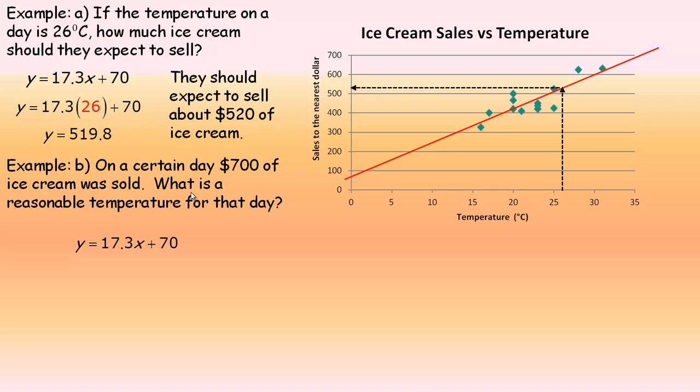In part B, it says on a certain day $700 worth of ice cream was sold. What is a reasonable temperature for that day? This is actually the Y value—it's the sales. So we put 700 in place of Y and solve for X. When I go to solve for X, the first thing I would do is isolate the 17.3X term. I want to get rid of the 70.